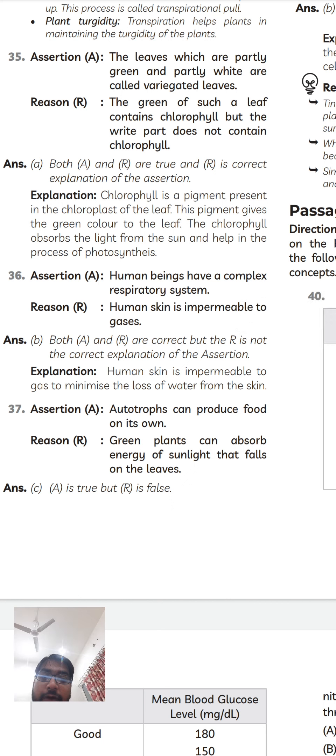Human beings have a complex respiratory system. Human skin is impermeable to gases, definitely correct. Both correct, but the reason is not the correct explanation of the assertion. Both are correct, A and R is correct, but R is not the correct explanation of the assertion. Next.